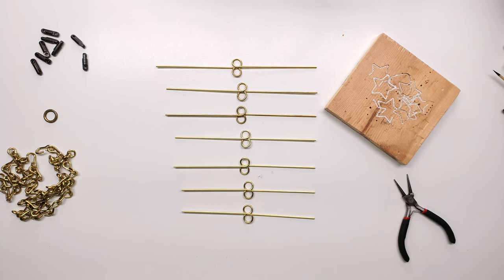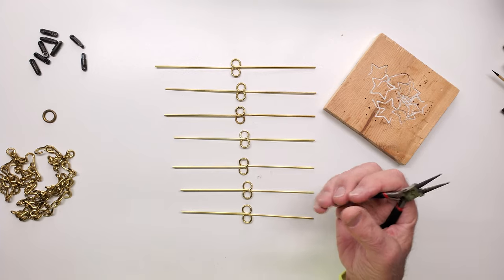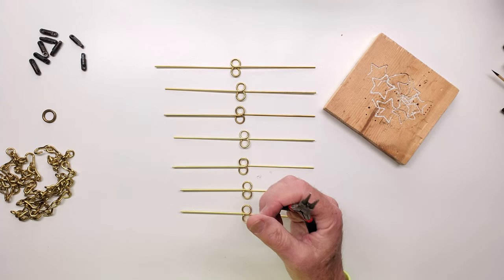Okay, I've got all my double loops made. Next, I'll take my jeweler's pliers and firmly grasp the double loop in the middle.